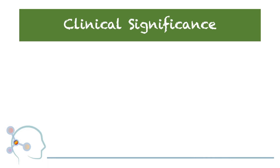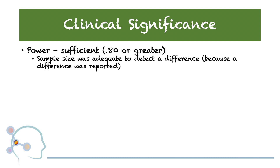For those of you who typically skip the stats section in an article, let's make more sense of this information from a clinical application standpoint. Let's begin with power. Power can be defined as having a sample size that was adequate enough to detect a difference between the things you're studying. In this case, there was an actual difference reported — p was less than .001. Remember that your sample is a representative of the greater population. If your sample size is too small, the ability to detect a difference when a true difference exists is diminished. Typically, a power reported at .8 or higher is generally accepted.